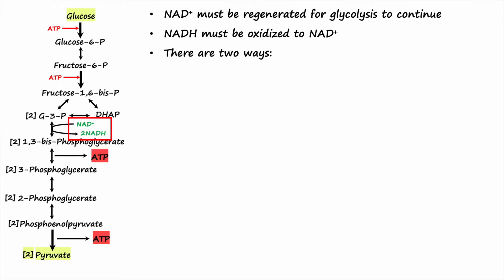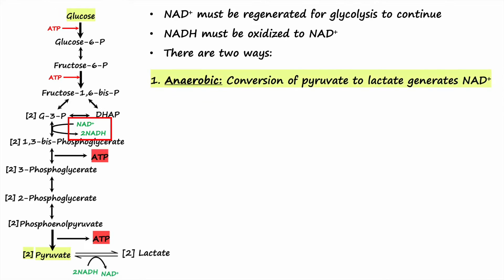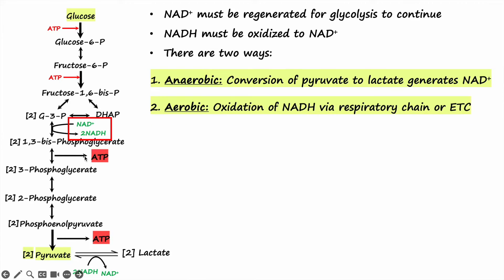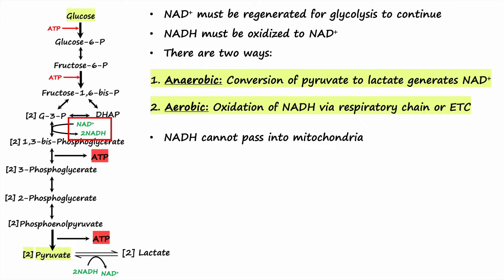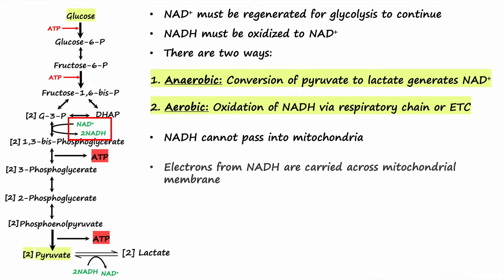There are basically two ways for NADH to be oxidized. One is the anaerobic pathway, where pyruvate is converted into lactate and during the reaction NADH is oxidized to NAD+, which is then used in the glycolysis pathway. The second is the aerobic condition, during which NADH is oxidized through the respiratory chain or electron transport chain. However, the problem is that both NADH and NAD+ cannot cross the inner membrane of the mitochondria.